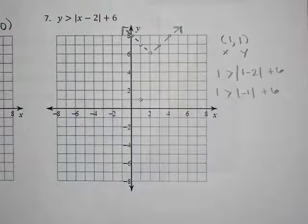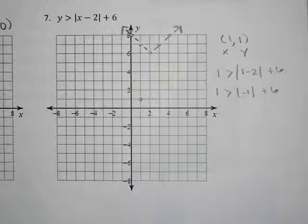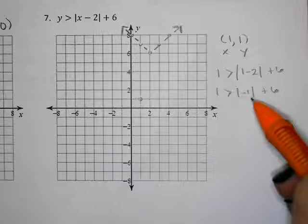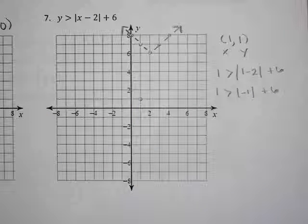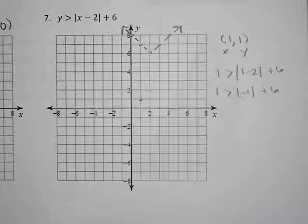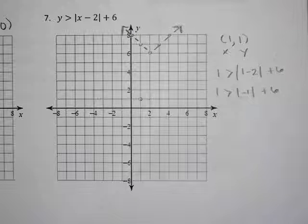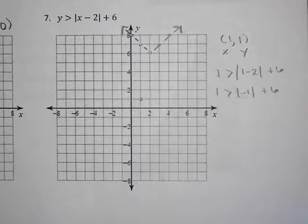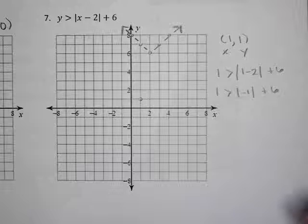Absolute value literally means how far away is that number from zero. So negative one, the distance from negative one to zero is a distance of one. Or if you go back to when you first learned about absolute value, your teacher probably said just take the number, make it positive.